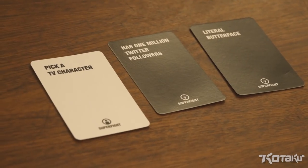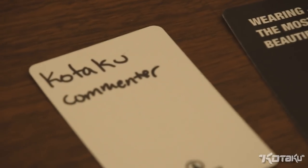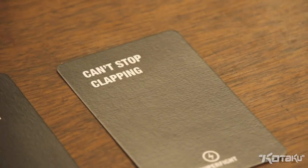Pick a TV character. It has one million Twitter followers. Literal butterface. Alright, well, we're gonna pick Jake. So he's a dog that can stretch into pretty much anything. And also he's very cool and he likes adventures. And he has a really cool girlfriend also. Yeah, formidable fire. And he speaks Korean. Okay, Kotaku commenter. Wearing just the most beautiful hat. Can't stop clapping. That actually sounds pretty accurate as to how I imagine a Kotaku commenter. And they're up against his dog who can morph into anything, who can stretch and turn gigantic and stuff. He can turn into an umbrella.